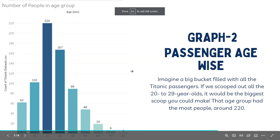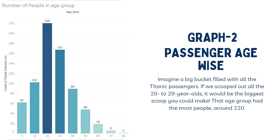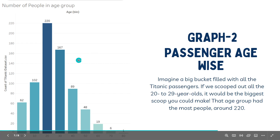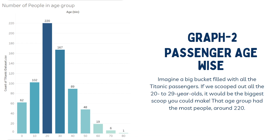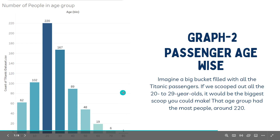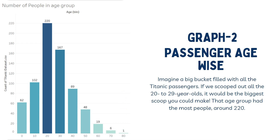Going back to the presentation — imagine a big bucket filled with Titanic passengers. If we scoop out all the 20-to-29-year-olds, it would be the biggest scoop we can make, because 220 people were from that age group. On the other hand, if we take a scoop of folks over 70, the scoop would be very small — only one or two people. If we analyze from youngest to oldest, the line would tilt way down to the left, meaning there were more young people than old people on the Titanic.